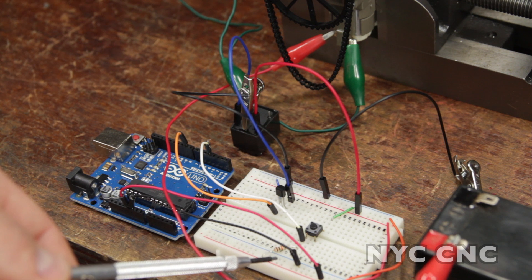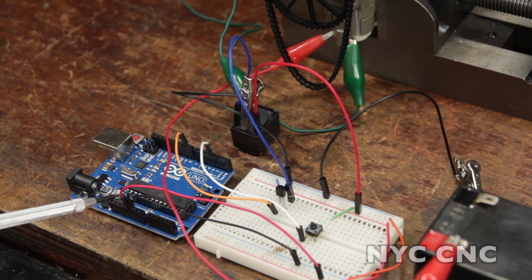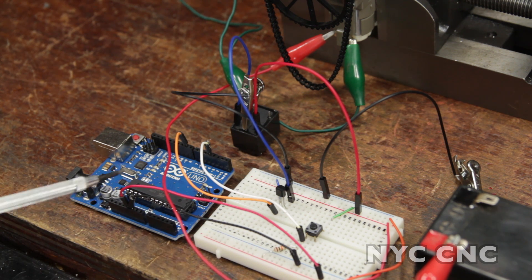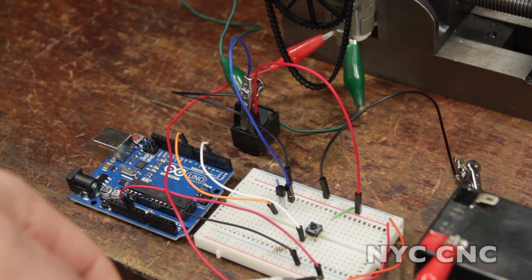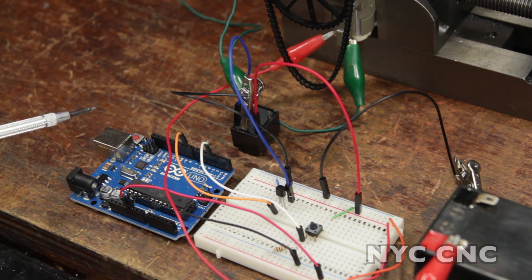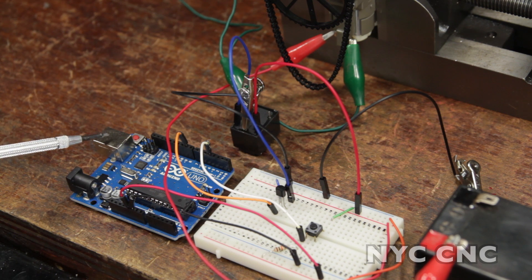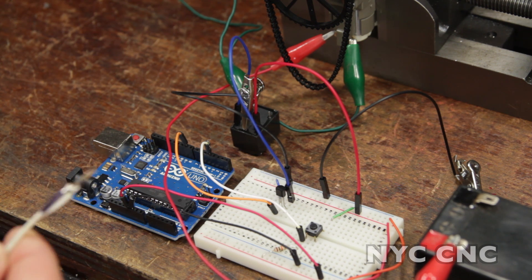The black wire establishes a common ground between the breadboard and the Arduino and then the red cable here is the 5 volt signal from the breadboard to the Arduino, but instead of normally powering it via USB I'm actually using an external power source here.